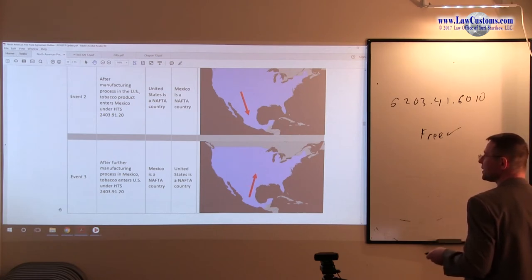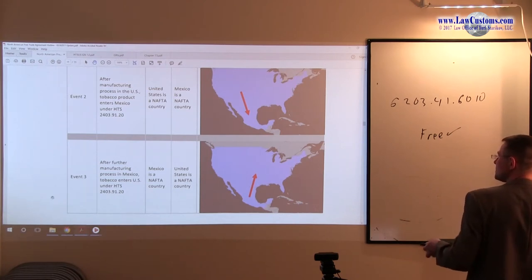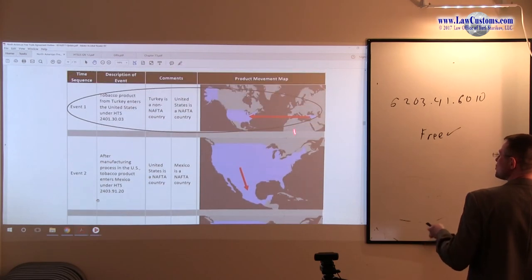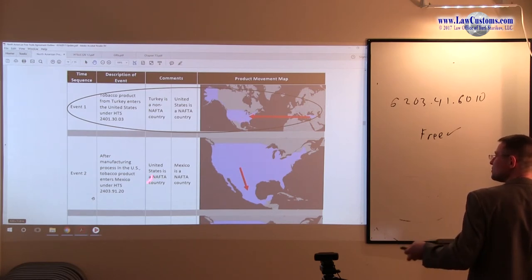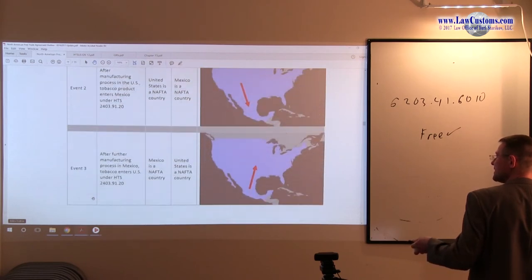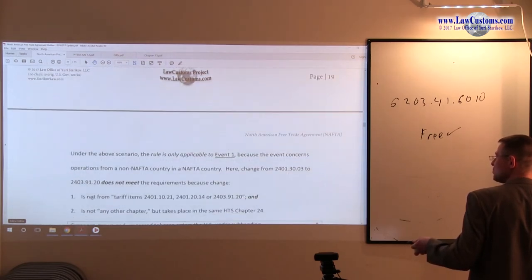The focus is what's taking place in the United States, not what's taking place in Mexico, because the focus is the immediate country. The first step is to identify a non-NAFTA country, and the second step is to identify NAFTA country, and to see what kind of manufacturing process is taking place in NAFTA country.